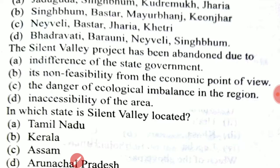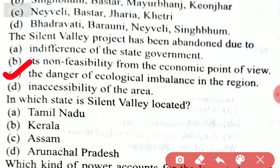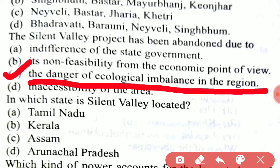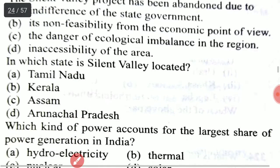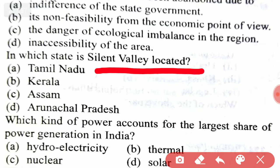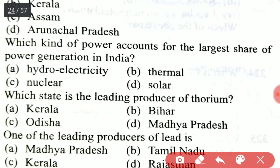Option C is the right answer: the danger of ecological imbalance in the region. Next, in which state is Silent Valley located? The right option is option B, Kerala.